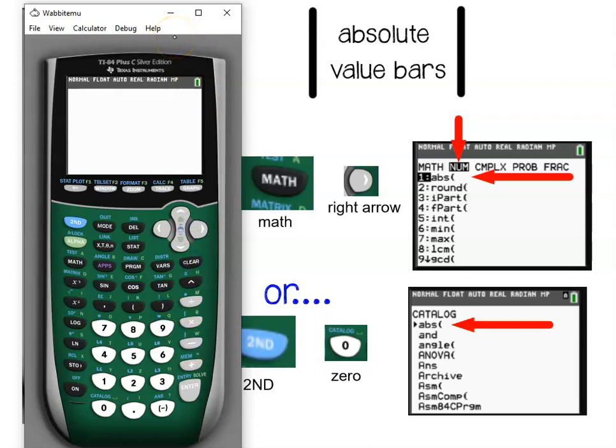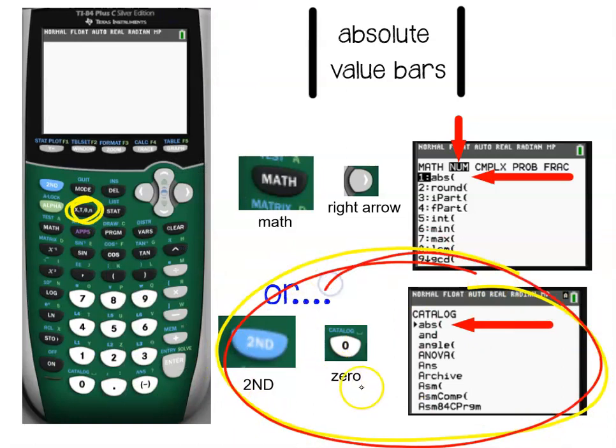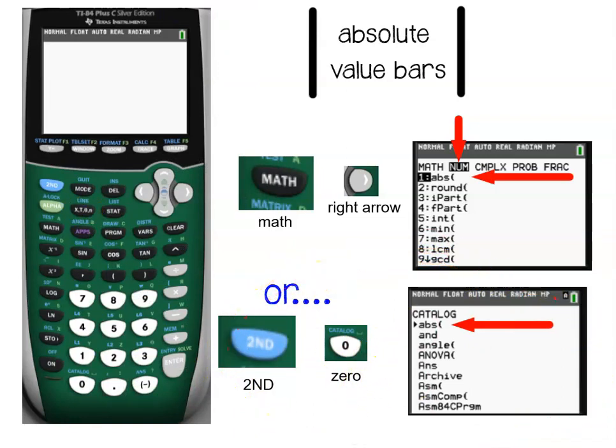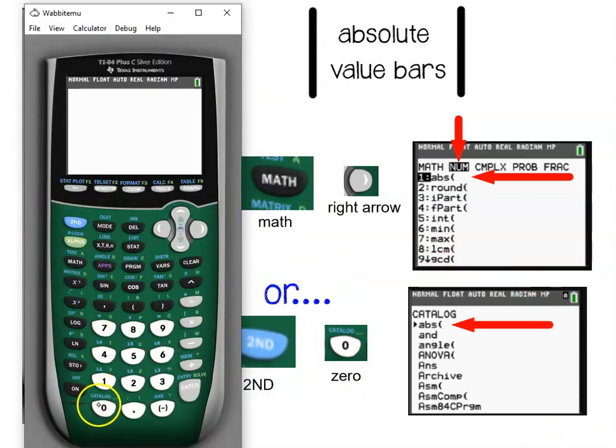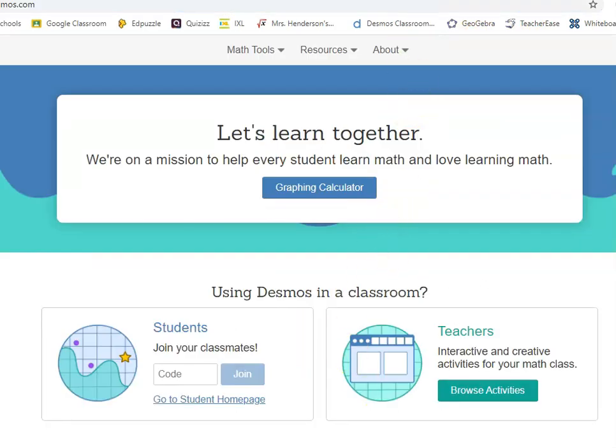The second way to get there is like going to the back of the book and looking something up in the index. It's called the catalog, and it's like the index of a textbook. Once you press the second button and you type the number zero, that brings you to the catalog of anything you can look up. And conveniently, absolute value starts with A, so it's the first one on the list. Press enter, and there it is. You can do the same on the Desmos graphing calculator.